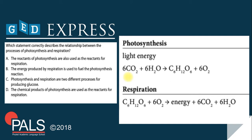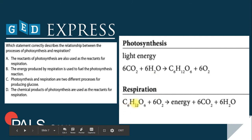Let's check letter A: the reactants for photosynthesis are also used as the reactants for respiration. I don't believe so. Looking at the equation, carbon dioxide and water are the reactants used to produce glucose in photosynthesis. But in respiration, the reactants are glucose and oxygen. So letter A is wrong.